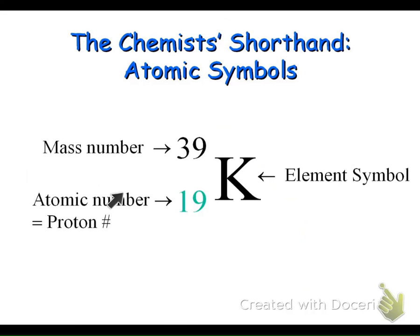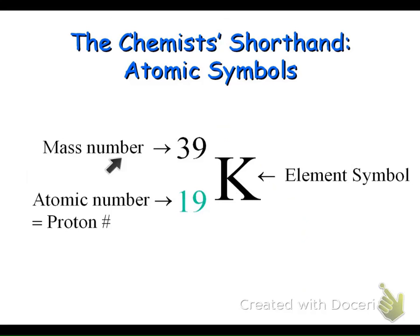One more time looking at the atomic symbol: we know our mass number here, and we can figure out how many neutrons we have, because mass number equals protons plus neutrons. We always know our protons equal the atomic number. So our atomic number here is 19 and our mass number is 39, so we can figure out the neutrons. This is a neutral atom because it's not showing us a charge.